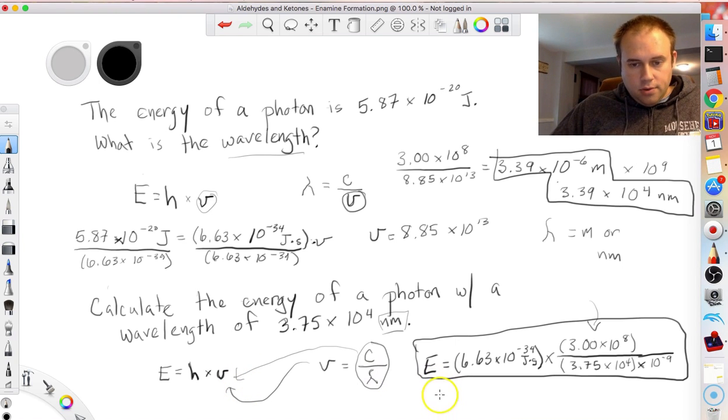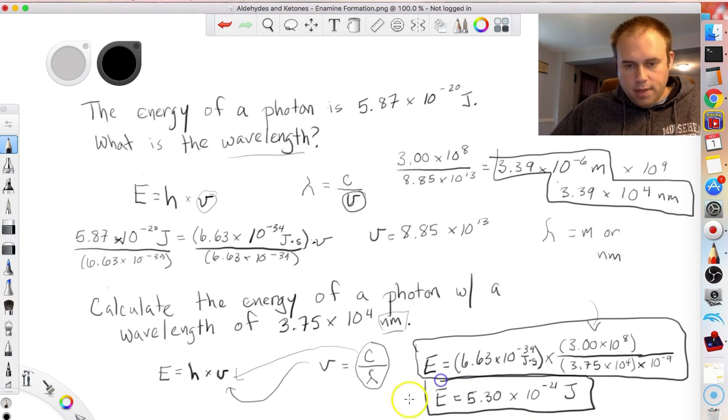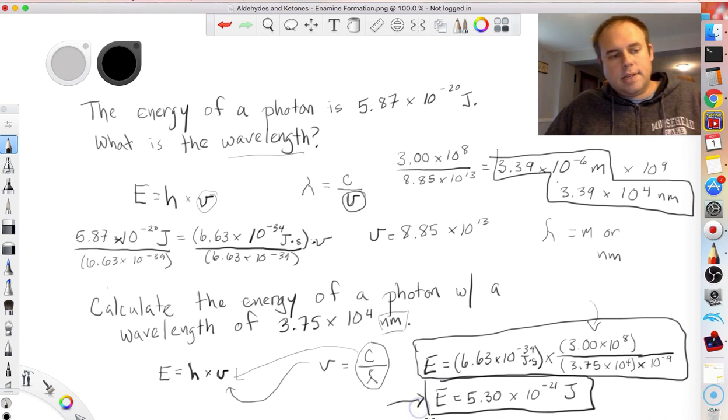So when I calculated through all this, I got that energy was equal to 5.30 times 10 to the negative 21st joules should be the answer that you ended up with. So this would be the answer for the second problem. That would be the quantized energy packet.